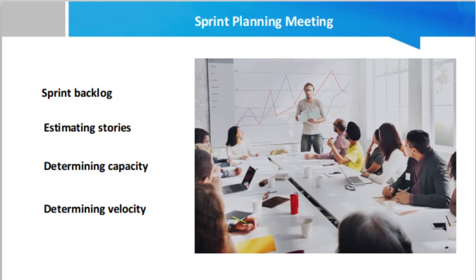The first thing is the sprint backlog. Your sprint backlog is a list of all the tasks you need to accomplish to complete the project. During the sprint planning meeting, your team will review the backlog to look at what's left to work on and decide what should happen next to keep the project on track. Any items not completed in previous sprints might be moved to the backlog, and new items that might have popped up during previous sprints will also be here.